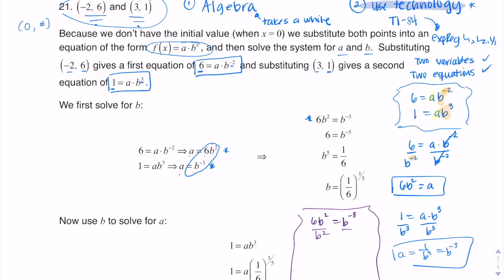If I divided both sides by b to the negative three, I would get a one on this side which would be great, but I'd still have letters and numbers on the same side. So I'm opting to divide by b squared instead. If I divide by b squared, my number is isolated. Now b to the negative three divided by b squared — when you have two powers with the same base, you subtract their exponents — and negative three minus two gives b to the negative five.